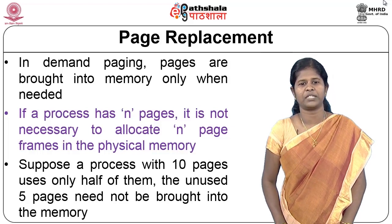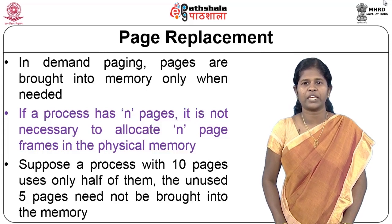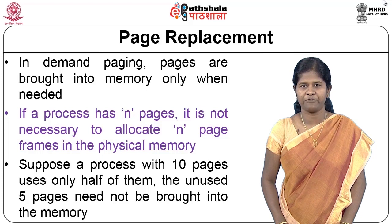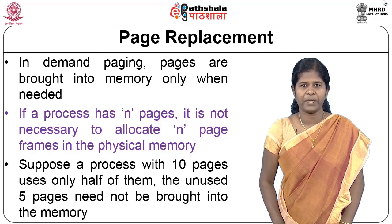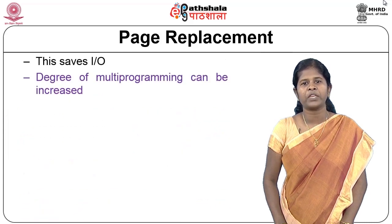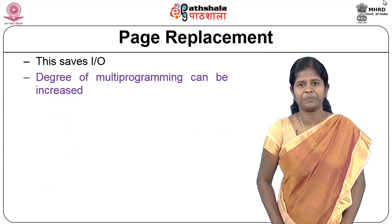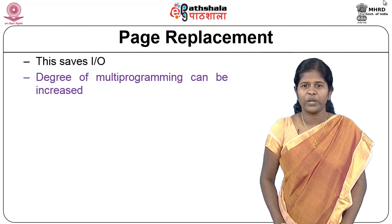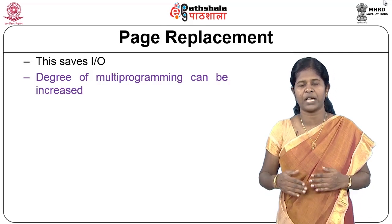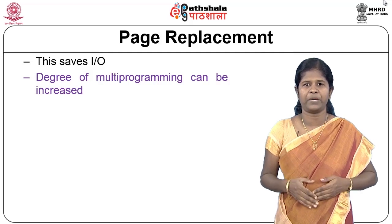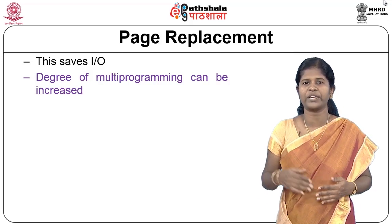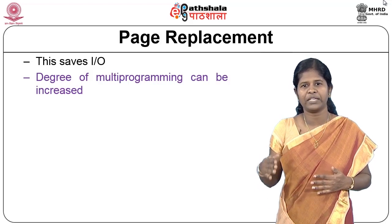Suppose we have a process with 10 pages and at a particular time the process is using only half of the pages. Then it's enough to have only 5 page frames in the physical memory for that process, and the remaining 5 pages need not be brought into physical memory. The pages are kept in the secondary storage device on disk, so only the needed pages must be moved into physical memory during execution, saving the time required to transfer the other 5 pages.